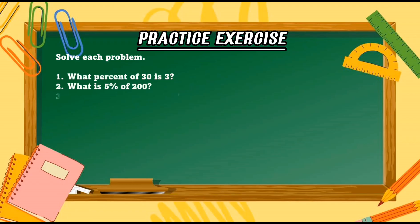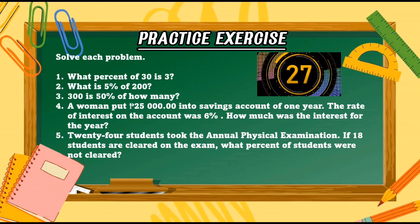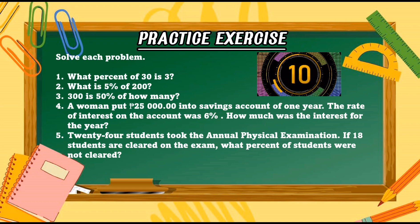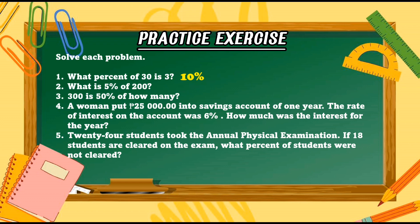Now, let's have a practice exercise. You are given 30 seconds to answer the activity. Your timer starts now! Let's check the answers. Number 1: 10%. Number 2: 10. Number 3: 600. Number 4: 1,500 pesos. Number 5: 25%.